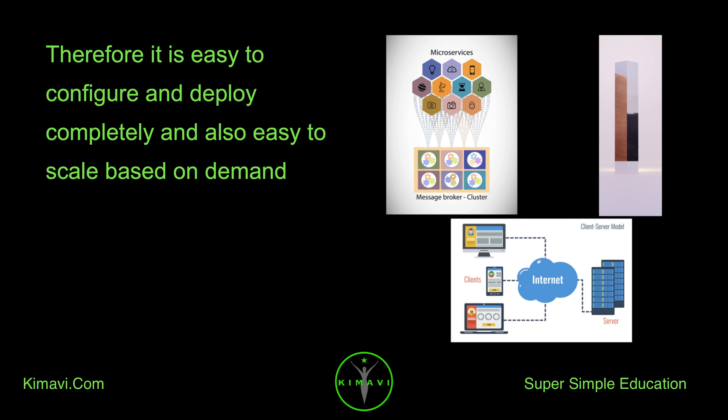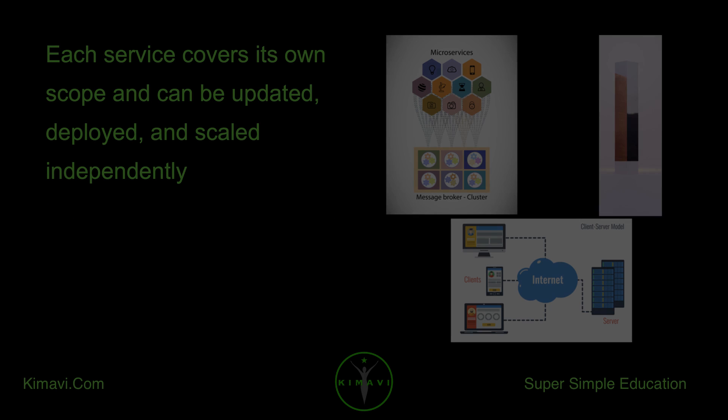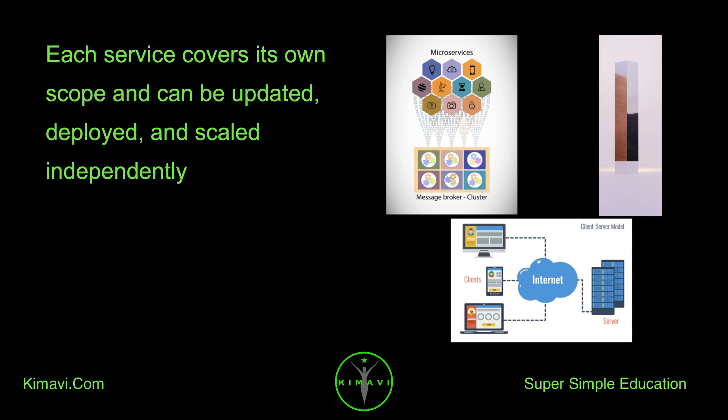Within a microservices architecture, the entire functionality is split up into independently deployable modules, which communicate with each other through defined methods called APIs. Each service covers its own scope and can be updated, deployed, and scaled independently.